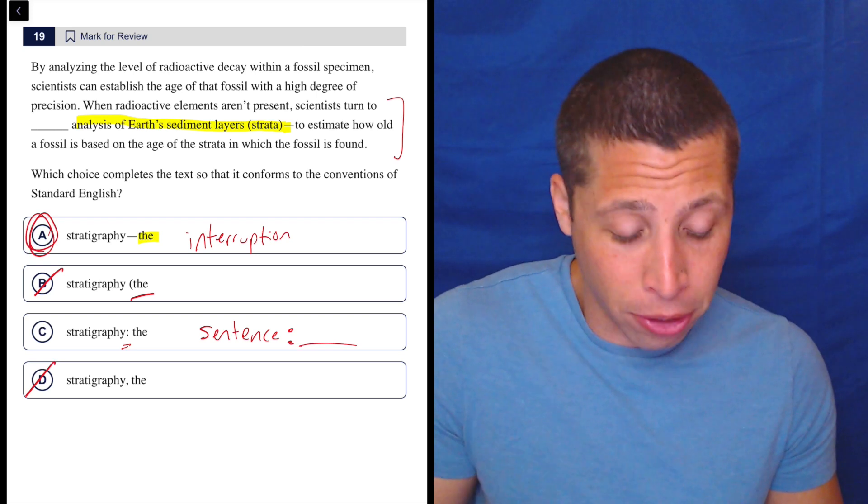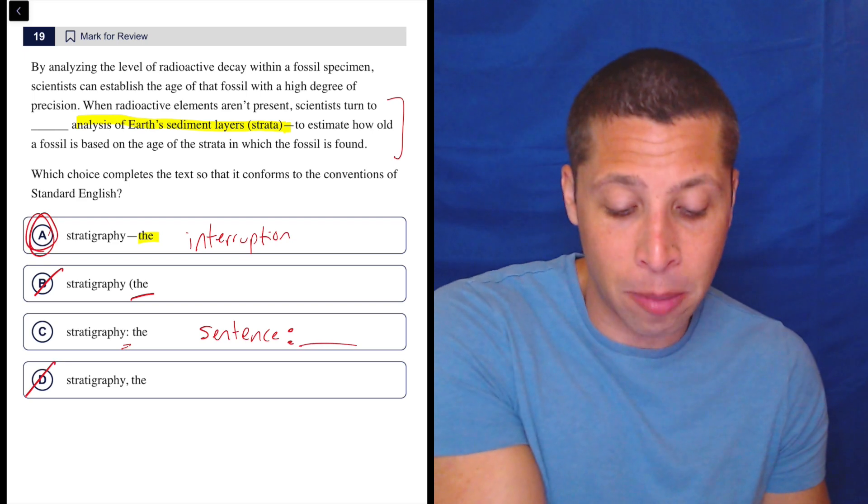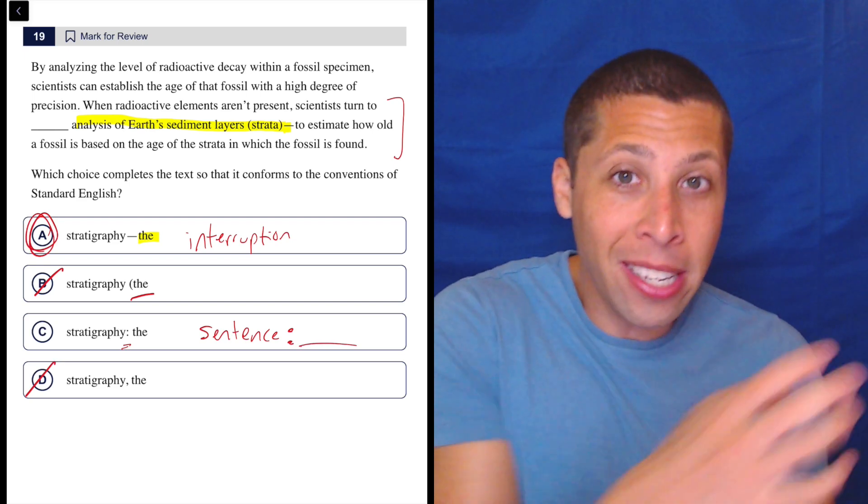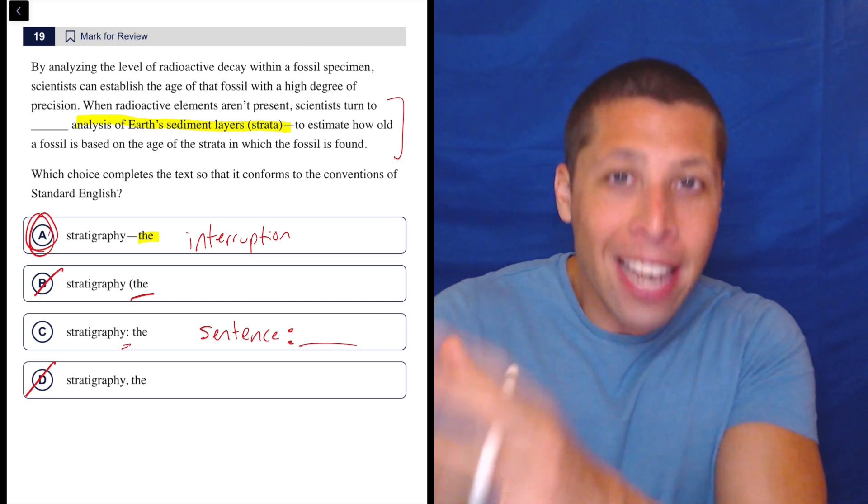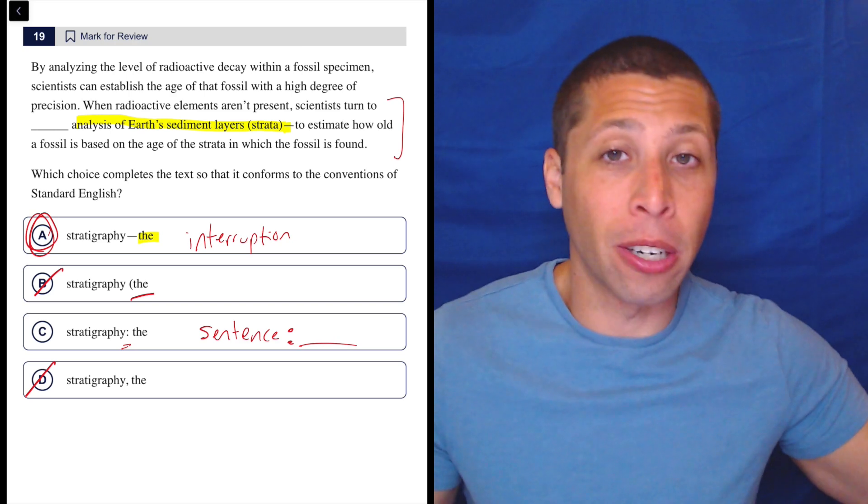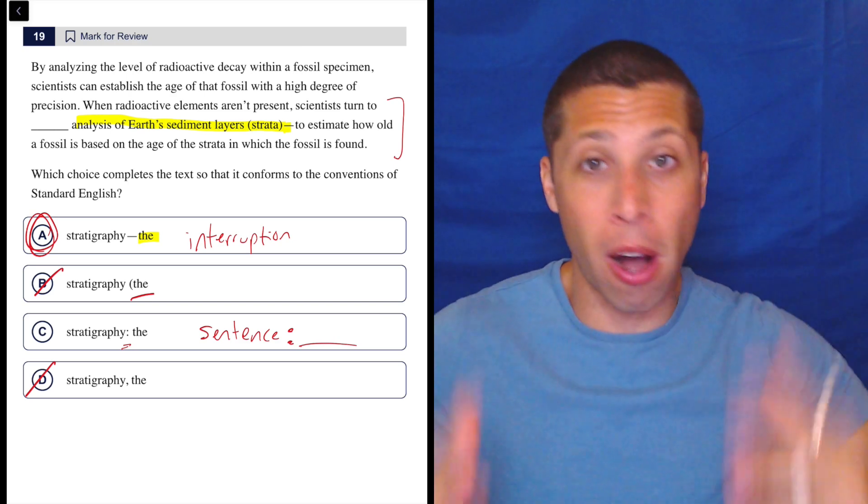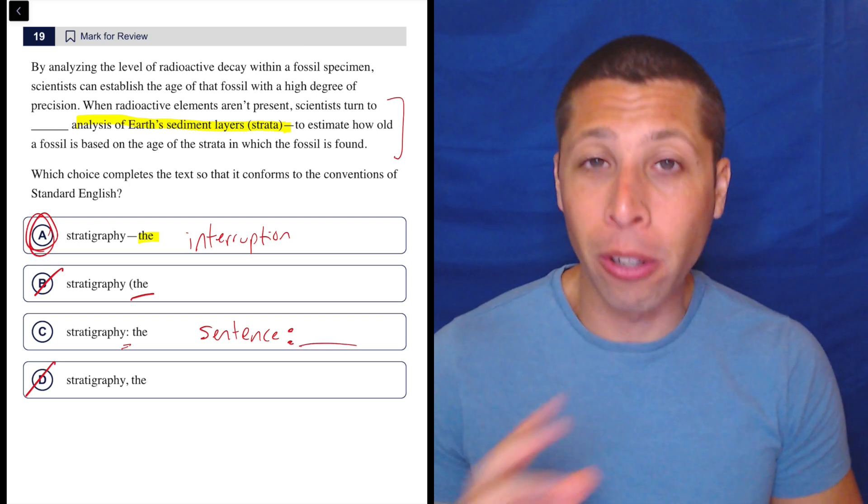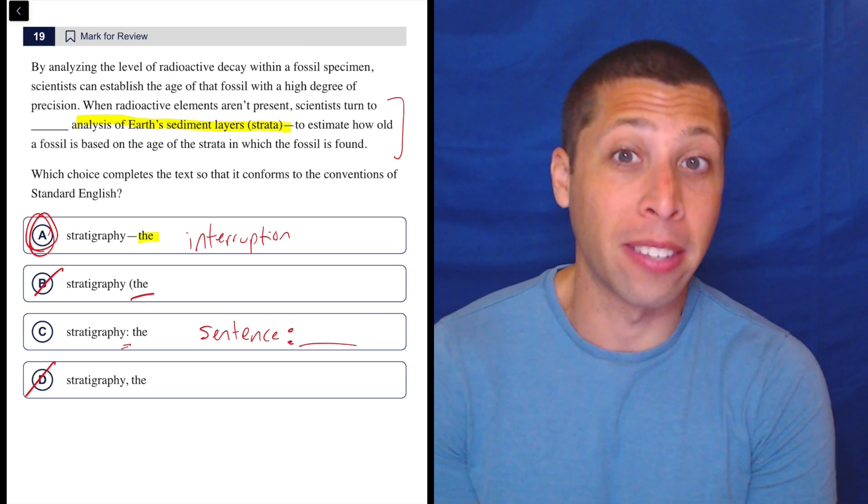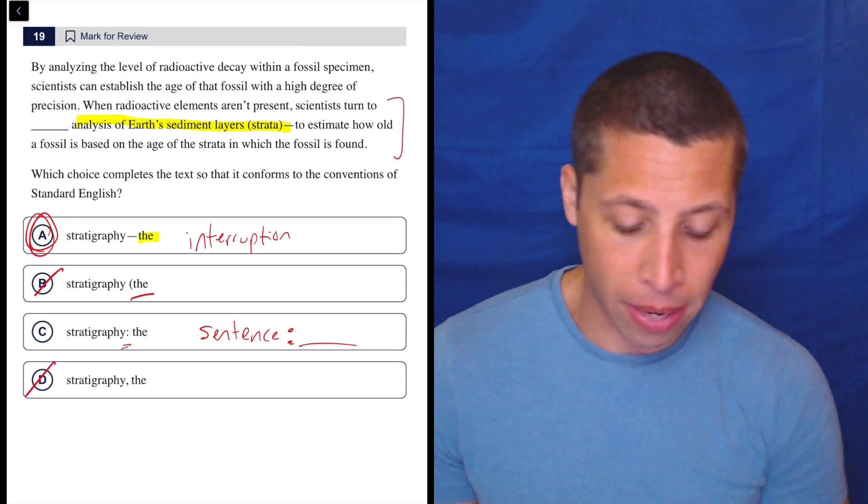But then we have this part after: to estimate how old a fossil is based on the age. That part is clearly following stratigraphy. So we can't end it and be like, oh, now we're going to pick it up again later with a colon. It's too big of a pause. It's too big of an end to do that kind of thing. The dash, we're allowed to do it. But the colon, semicolon, we wouldn't be able to. It's basically like we've ended the sentence where that colon is. So that doesn't make sense.